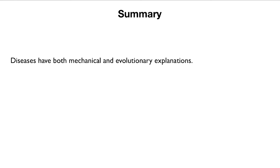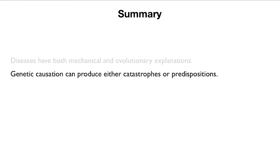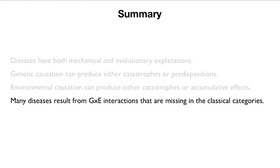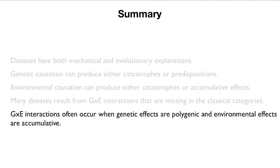To summarize: diseases have both mechanical and evolutionary explanations. Genetic causation can be either catastrophic or via predispositions. Environmental causation can also be catastrophic or act through a cumulative effect. Many diseases result from genotype-by-environment (G×E) interactions that are missing from the classical categories. Such interactions often occur when genetic effects are polygenic and the environmental effects are cumulative.